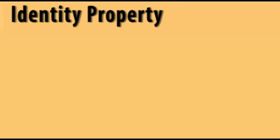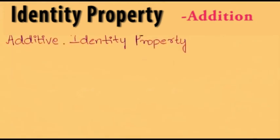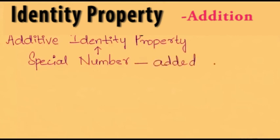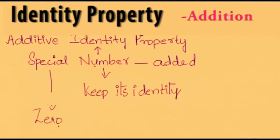Now we are going to discuss identity property of addition, also called the additive identity property. This property states that there exists a special number called the additive identity, which when added to any number, that number will still keep its identity and remain the same. That special number is zero, symbolically: a plus 0 equals a, and 0 plus a also equals a.